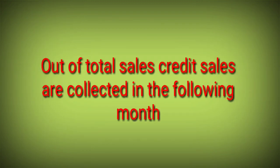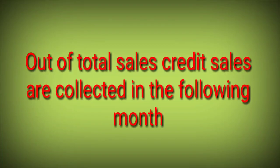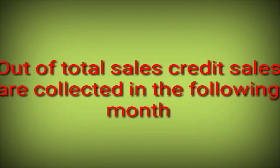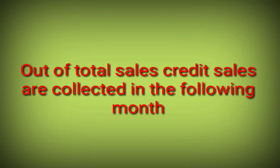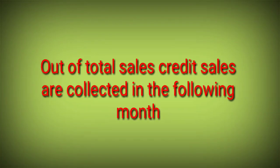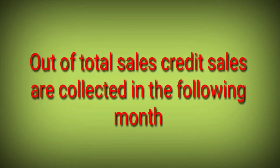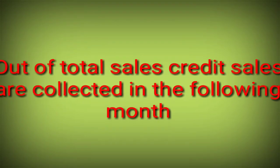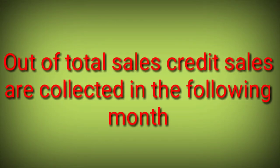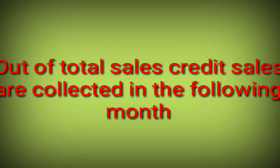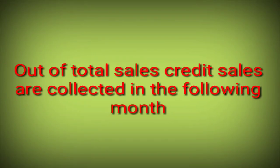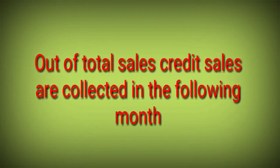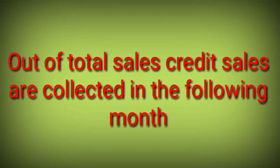An important adjustment asked in every question is: out of total sales, credit sales are collected in the following month. 'Following month' means — for example, if January is the sale month, then the following month is February. So January's credit sales are recorded as collection in February, February's in March, and March's in April. Whenever the following month concept applies, you write the collection in the next month.